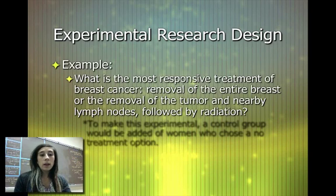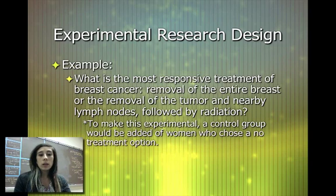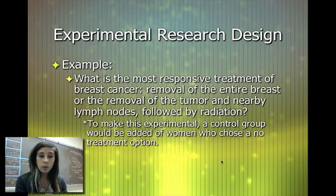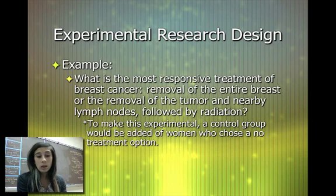Looking back at the breast cancer example, we can turn it into experimental research design by adding a control group that receives no treatment. So we have: a control group with no treatment, and then two other groups — removing the entire breast, or removal of the tumor and lymph nodes followed by radiation — and we compare to see if there is any correlation.